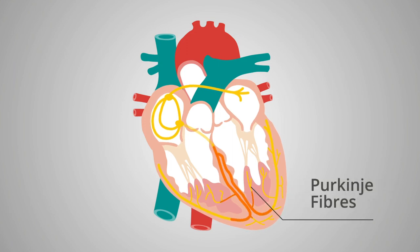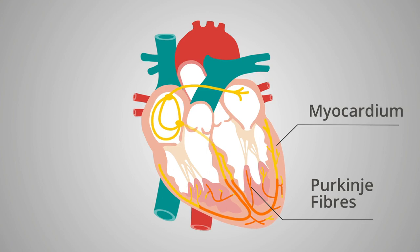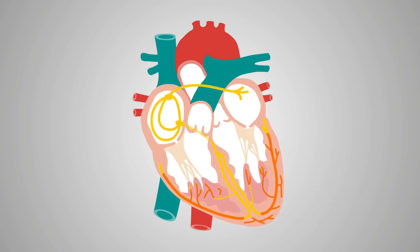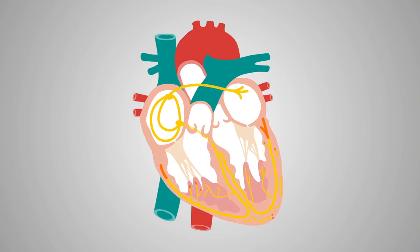Finally, the Purkinje fibers carry the impulse to the myocardium of the left and right ventricle, allowing complete ventricular depolarization. This results in simultaneous ventricular contraction.